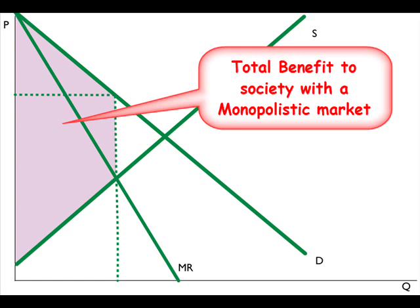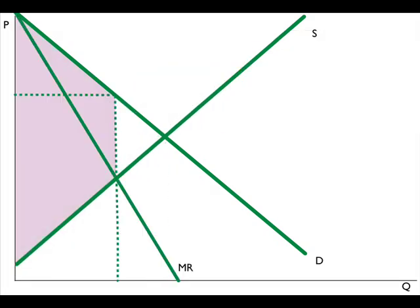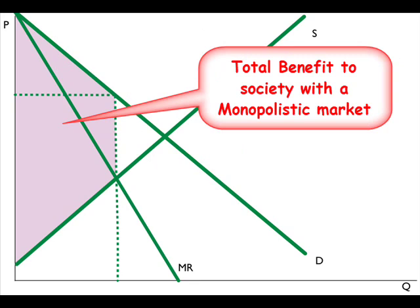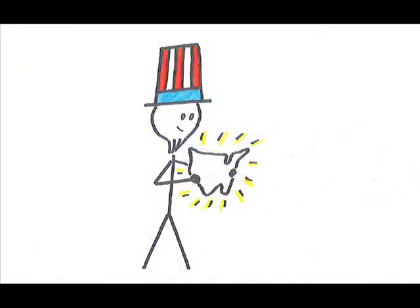Now, compare the benefit to society under a competitive market to a society under a monopoly. The difference, this triangle, is the deadweight loss to society. The existence of this deadweight loss is the reason that the government, if interested in society's overall well-being, interferes with monopolies.